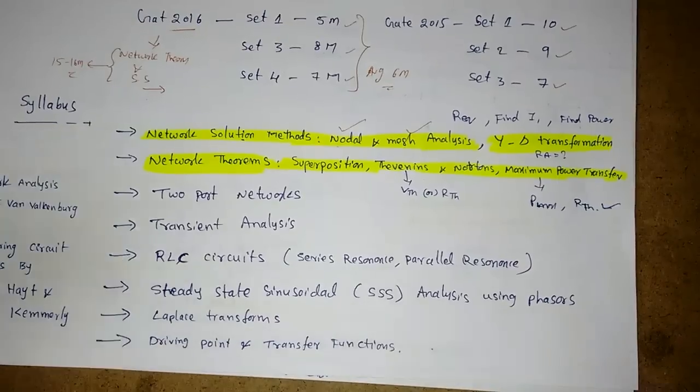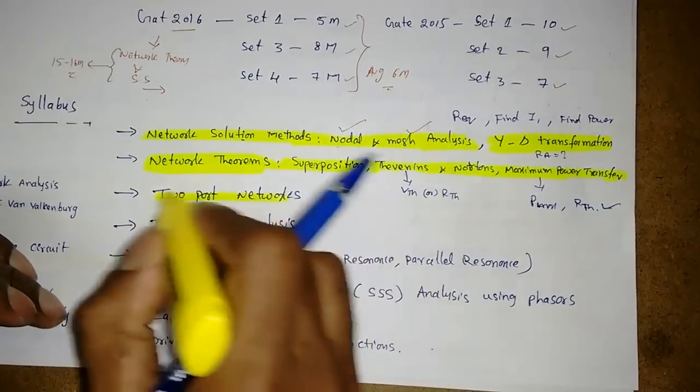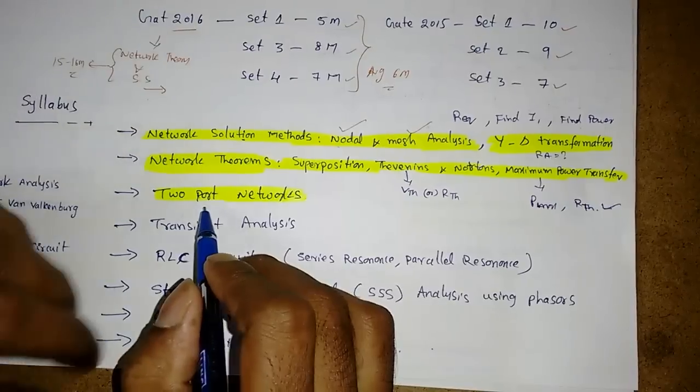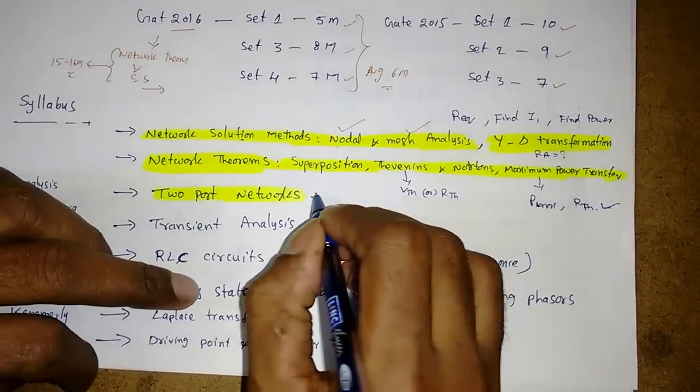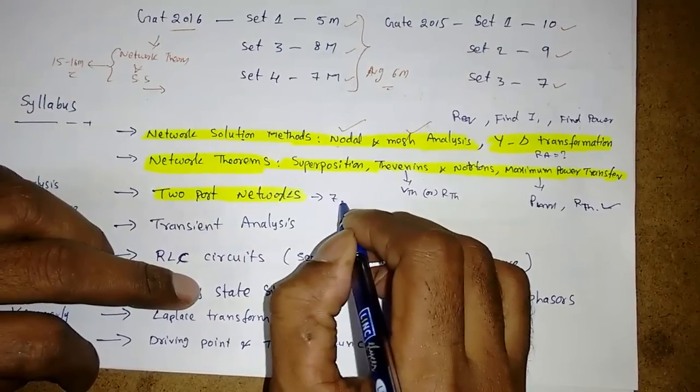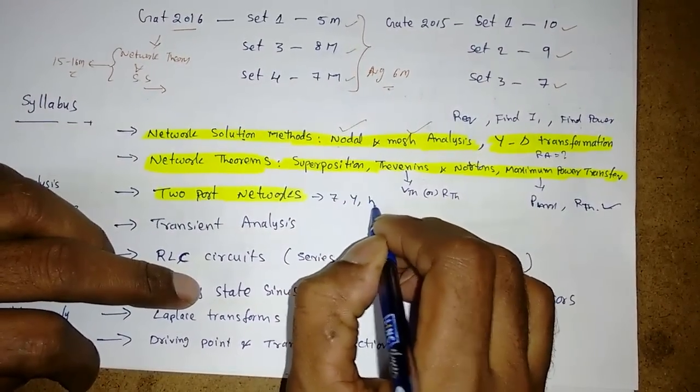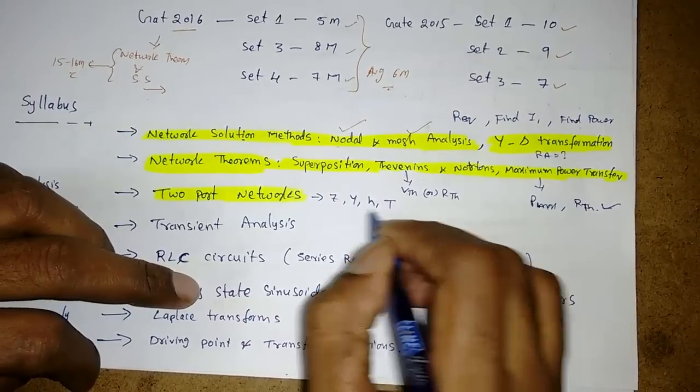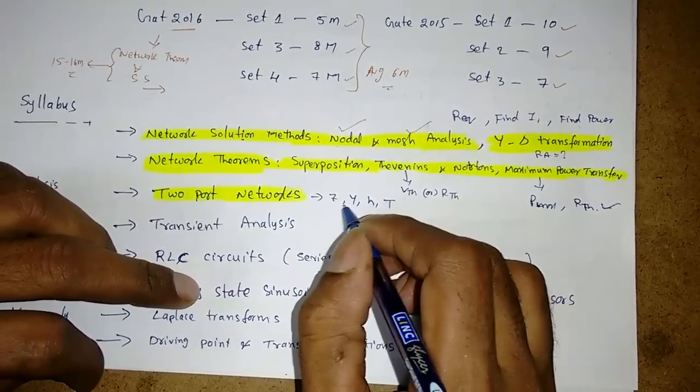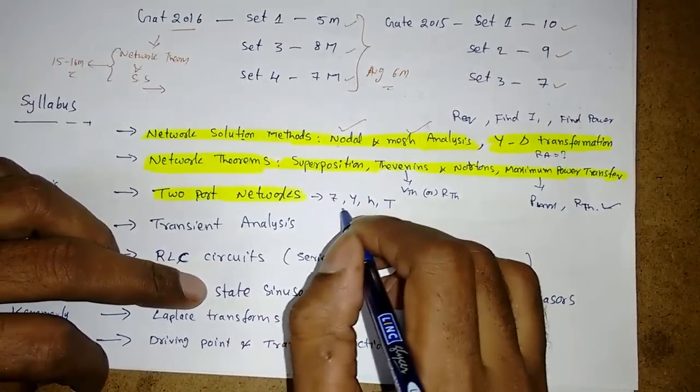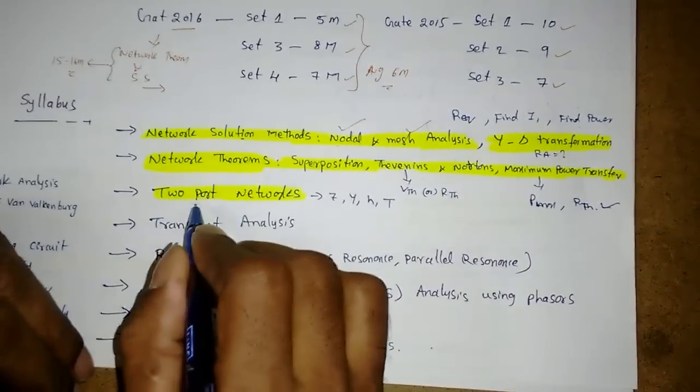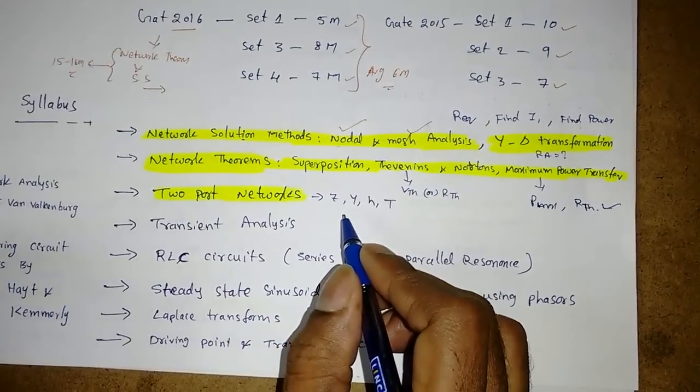Next one is the two port networks or two port parameters. Again, 100% sure from this topic like Z parameters, Y parameters, H parameters, then transmission parameters. What is the condition for reciprocal or symmetry, find some different parameters. There is no paper without the two port parameters concept.